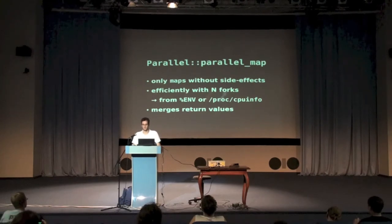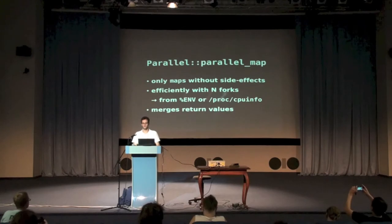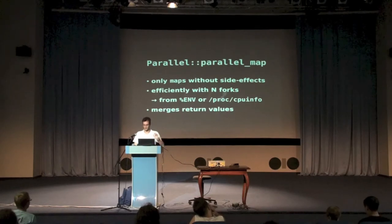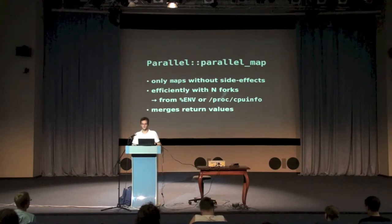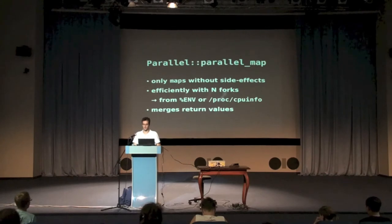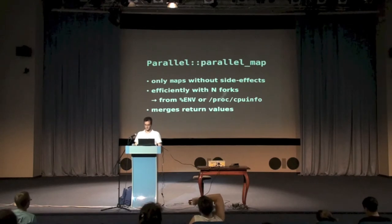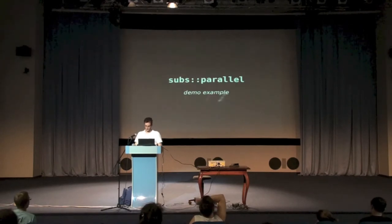As long as your map does not use side effects on the alias of the variable, you can just parallelize it as shown. In a fork you have aliases but to a clone of your variable, which is pretty useless after the map is finished. It will automatically fork N processes where N is determined either by an environment variable or by looking into /proc/cpuinfo on Linux systems, and it will automatically merge all the return values into an array for you — so you have a minimum of administrative tasks around it.